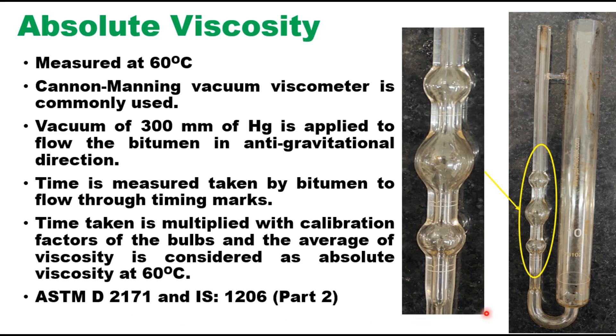Now since the bitumen here at 60 degree centigrade is quite viscous, the viscosity of the binder at this temperature is quite high. A vacuum of 300 millimeter of Hg or mercury is applied to flow the bitumen in anti-gravitational direction. So this is the mark in the large tube up to which the bitumen is filled and then vacuum is applied so that it flows from this point to this point and from this point to this point.